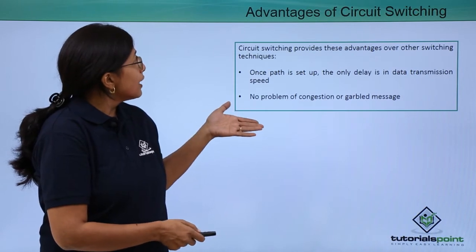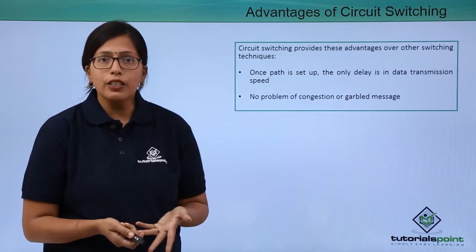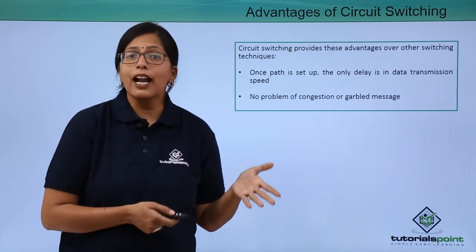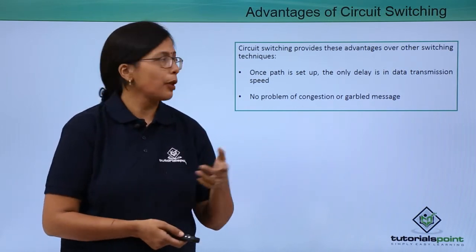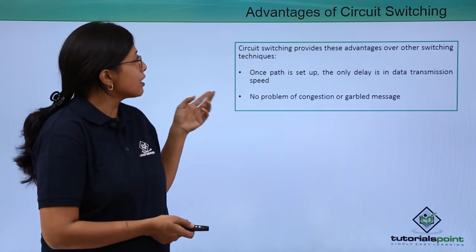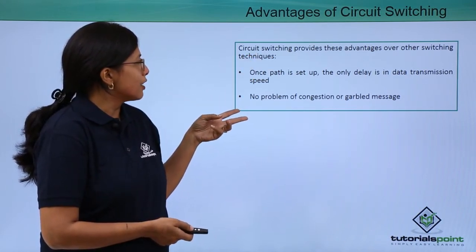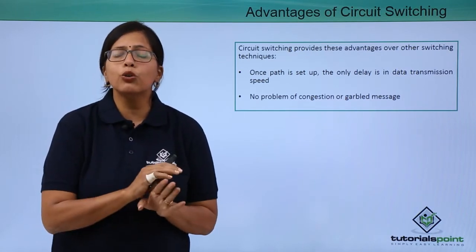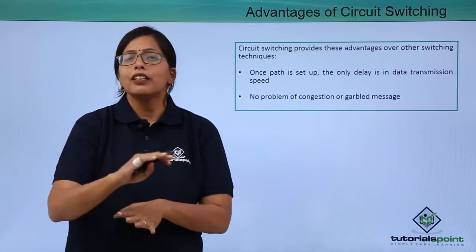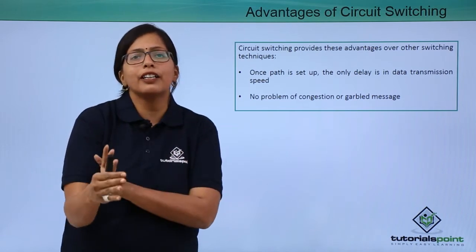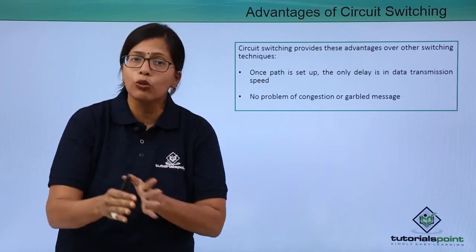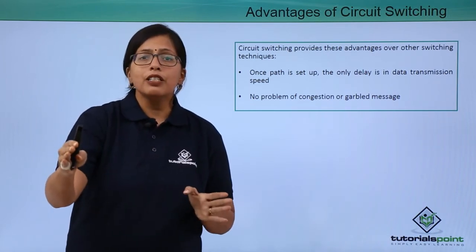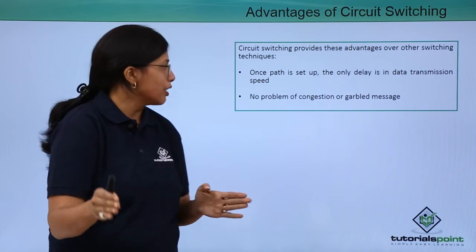Now let's look at the advantages of circuit switching. You should remember that ARPANET, the first network, used circuit switching. Circuit switching has two advantages. The first is that once the path has been set, there is no problem in communicating the data — it won't break midway. That dedicated path will remain established till the end of the message.